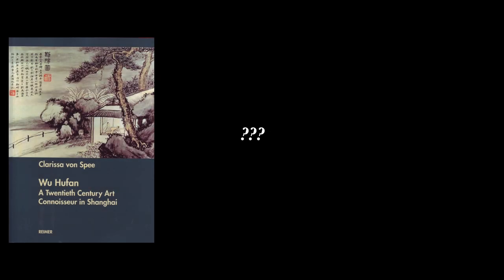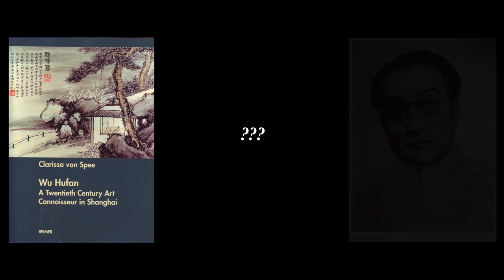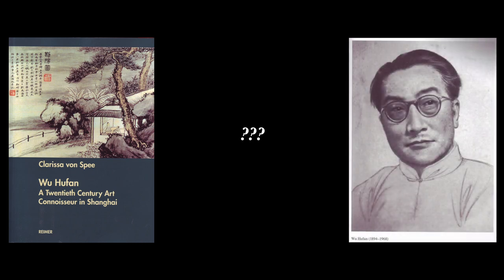Finally, for orthodox landscape in this lecture, let me point out that it continues to be the absolute foundation of literati painting practice and connoisseurship down into the 20th century. In the 1930s, the highest level of connoisseurship and collecting was represented by the great collector-connoisseur Wu Hu Fan and his disciples in Shanghai. He's the subject of a fine book by Clarissa von Spee titled Wu Hu Fan: A 20th Century Art Connoisseur in Shanghai, Berlin 2008. Here's a photo of Wu Hu Fan from her book. Born in 1924, he died in 1968, before I could go to China, so I never knew him, except by reputation.